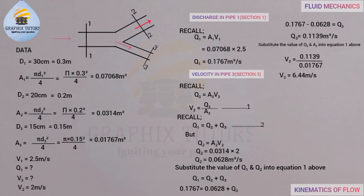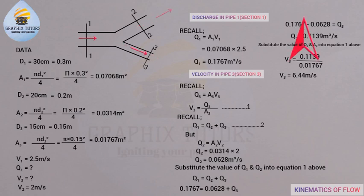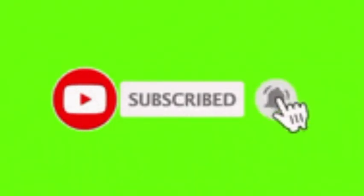We've now solved the question involving this branching pipe problem. In a previous example we covered a single pipe with just two sections — you can click the link at the top right corner of the screen to watch that video and understand more about flow in pipes. If you found this video helpful, please don't forget to click the subscribe button. Thanks for watching.